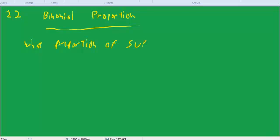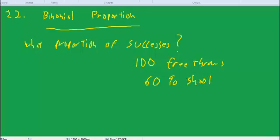It's a good idea to have a reasonably large number for this, let's say at least 40 trials. So what proportion of successes? Let's say we're going to take a batch of 100 free throws, and we have a 60% free throw shooter, and what we're counting is the proportion of successes.